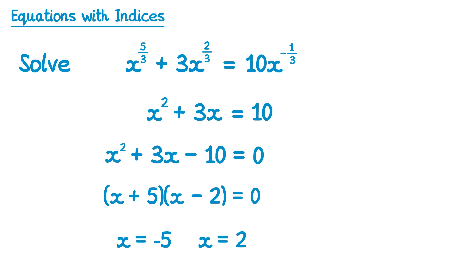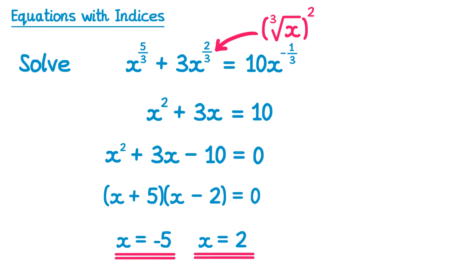Now at this point you might be thinking we need to lose that negative 5 solution — however in this one you don't. If we look at the indices for this question, we had 3 on the bottom, so x to the power two thirds is the same as the cube root of x squared. Now you can cube root any number, so the negative values are absolutely fine — it's when you have a square root that you can't square root negatives, so you need to lose those solutions. Also in this question I didn't say x is greater than 0. So in this case, both solutions are fine: x equals negative 5 and x equals positive 2.